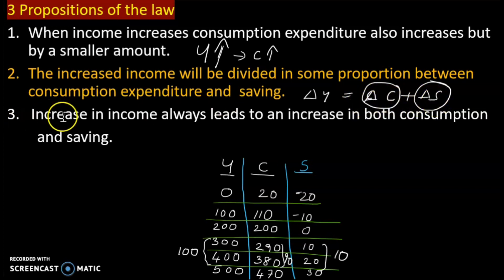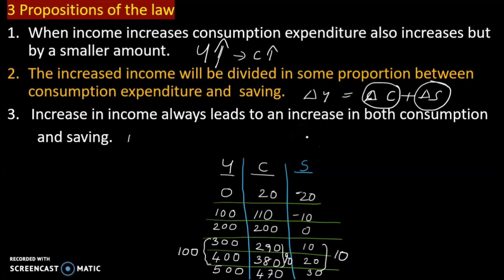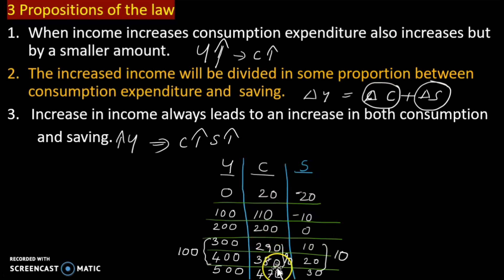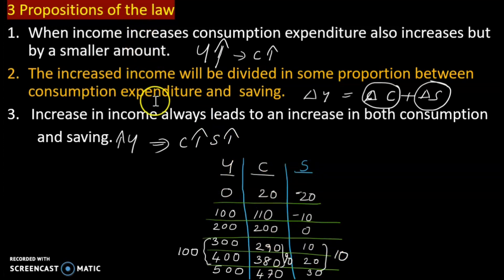Proposition three: an increase in income always leads to an increase in both consumption and saving. As income increases, both consumption and saving rise — for instance, consumption may increase by 90 or 80, and saving by 10 or 20. So we are studying these three propositions.